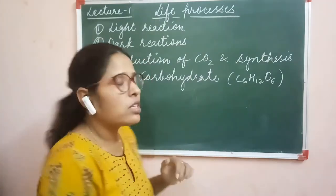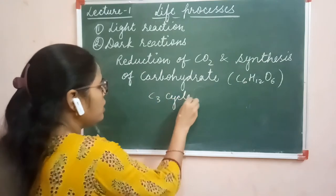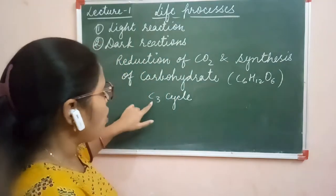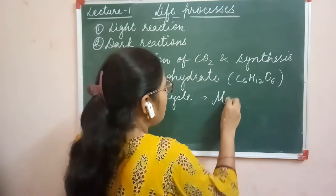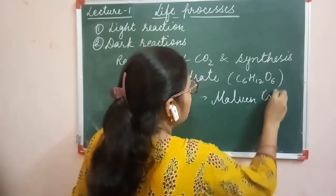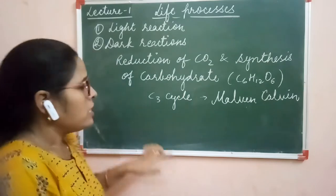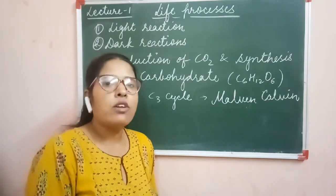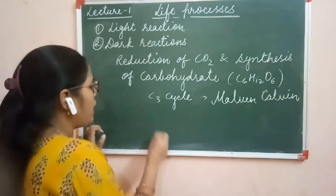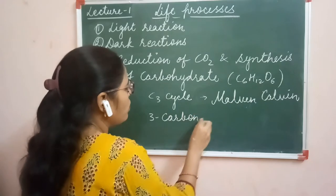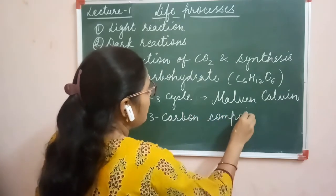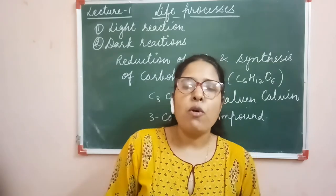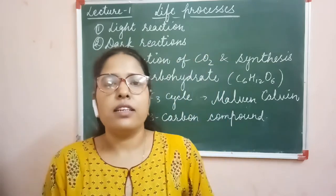The reduction of CO2 — this process is called the C3 cycle. The process of carbohydrate formation from CO2 reduction is called the C3 cycle. This cycle was discovered by a scientist named Melvin Calvin, and that's why it is also called the Calvin cycle. We call it the C3 cycle because the first stable product formed from the reduction of carbon dioxide is a 3-carbon compound — that is phosphoglyceric acid.